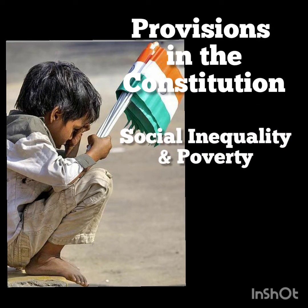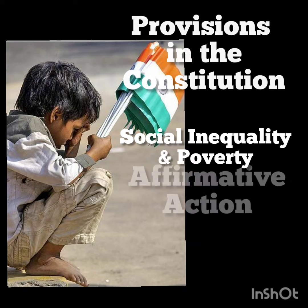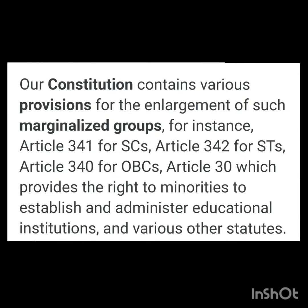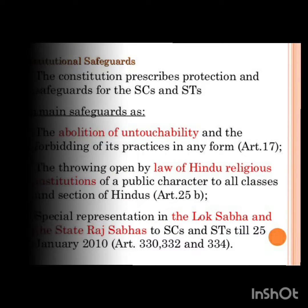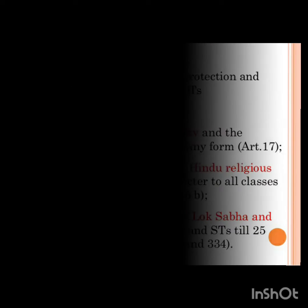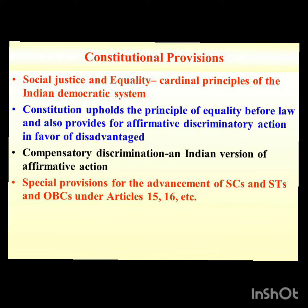We will also cover social inequality and poverty, and finally affirmative action. First, let's see the provisions in the constitution. The following measures were undertaken for the betterment of the marginalized groups: people cannot be discriminated against in the use of public facilities like shops, hotels, and malls. They can also use common wells, tanks, roads, and other public infrastructure. Untouchability has been abolished, and practicing untouchability is a punishable offense.